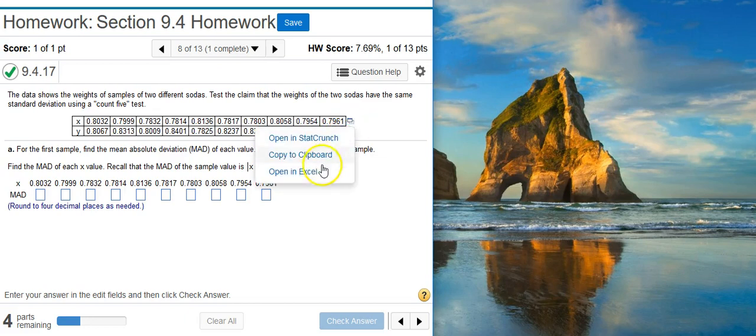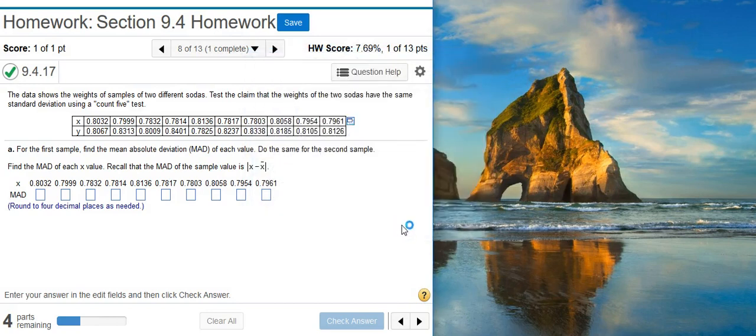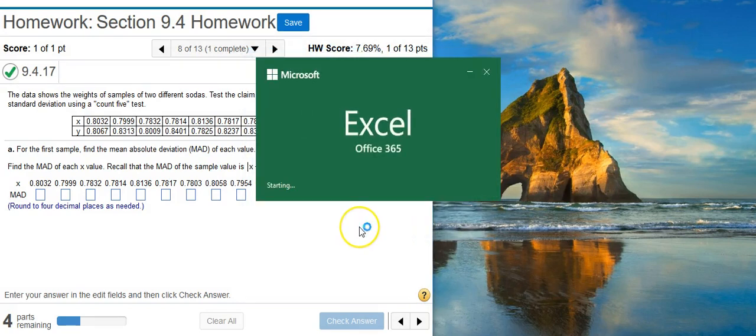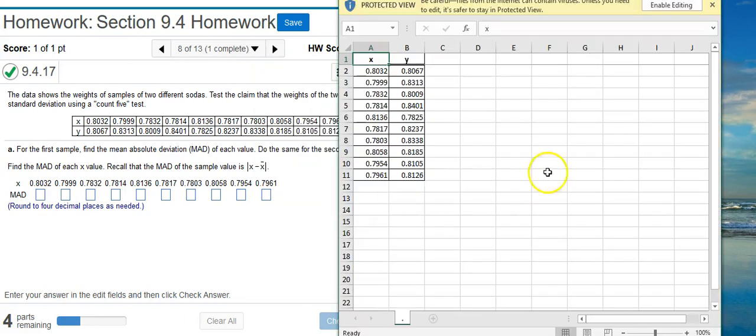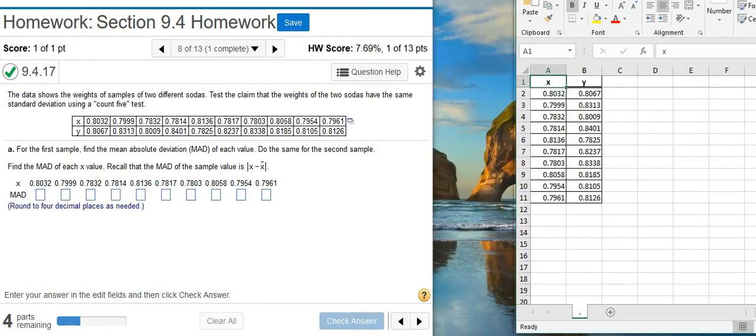So I'm going to dump my data here in Excel. If there's sufficient interest in learning how to do this in StatCrunch, I can certainly make a video to that end. But I don't want to just make the video if there's not a whole lot of interest with it, because it is really clunky to use in StatCrunch.